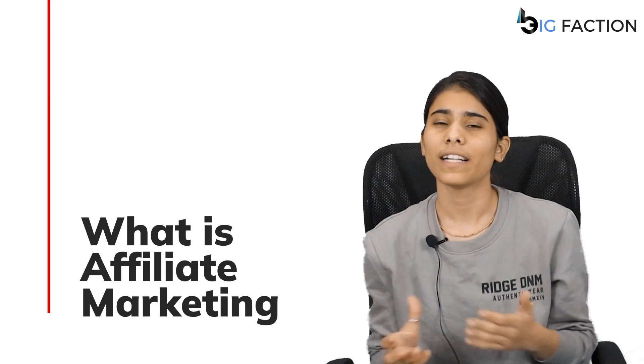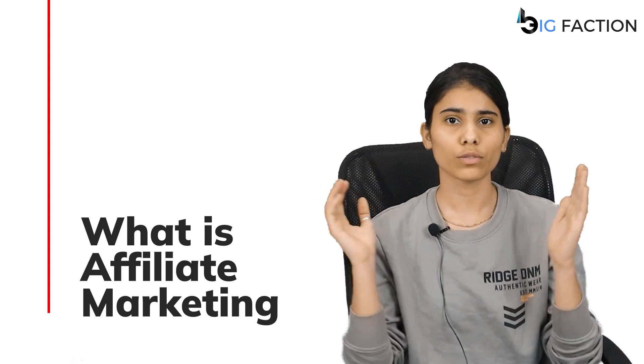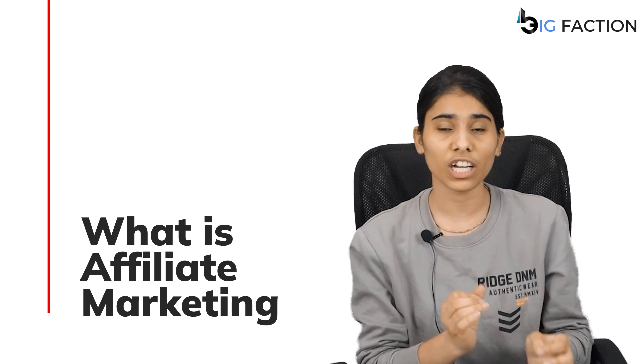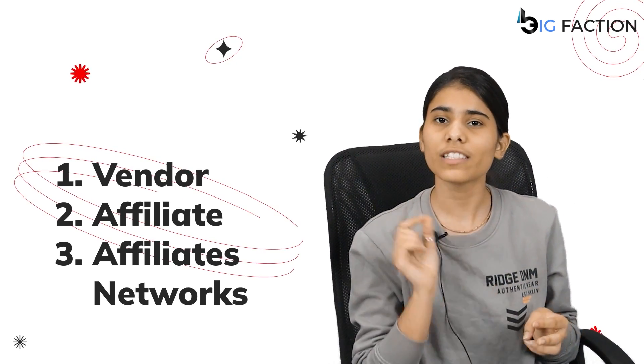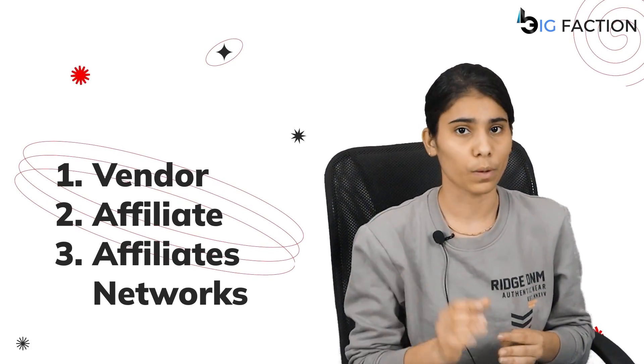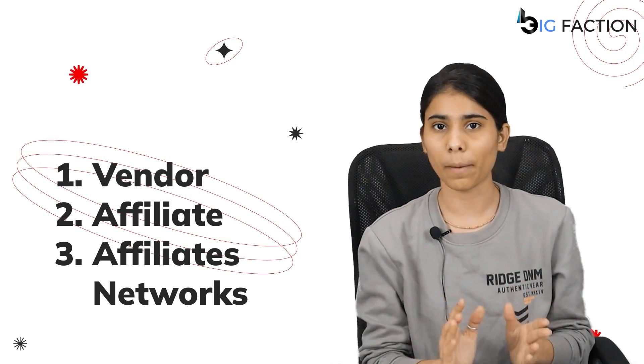Now we will talk about which components are involved in affiliate marketing. There are majorly three components: first is vendor, second is affiliate, and third is affiliate networks. Vendor is the one — as in the first example — who is the manufacturer and owns the product. The affiliate is the one who is going to promote.